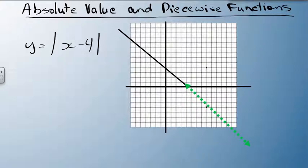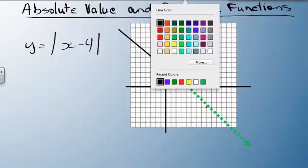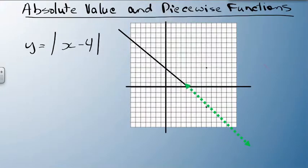But because it's an absolute value, we can't have any negative numbers. There cannot be any negative answers. So what ends up happening, over here when the y value is negative 4, the absolute value of that is actually positive 4. So what the line ends up looking like, it ends up bouncing right back up again like that.